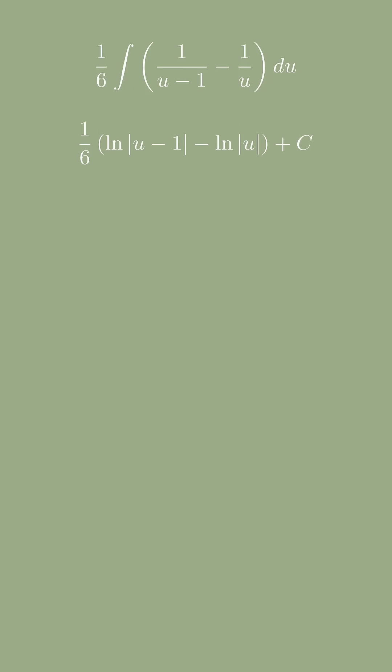Integrating term by term we get 1 over 6 of ln u minus 1 minus ln u plus c.